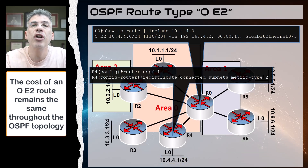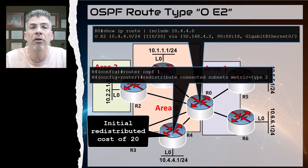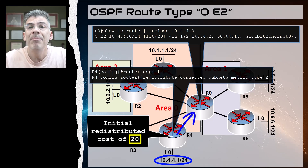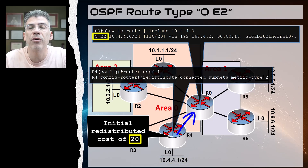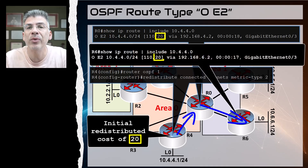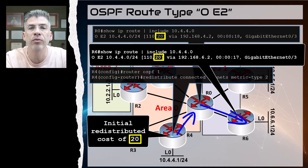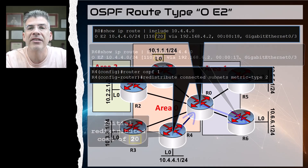For example, the initial cost assigned by R4 as the ASBR to the 10.4.4.0/24 network is 20. When advertised to R0, because it is an E2 type route, the cost within R0 remains 20. When R6 receives it, the cost to reach it will still be 20. So no matter how far within the OSPF domain the route is advertised, the cost of an E2 external route always remains the same.